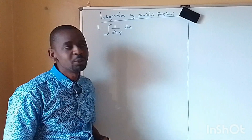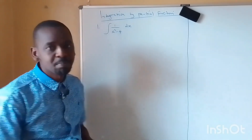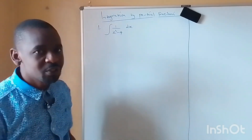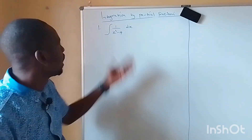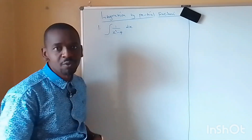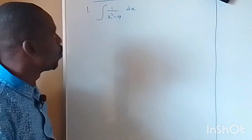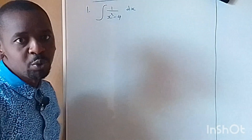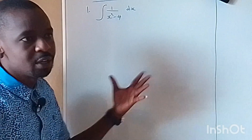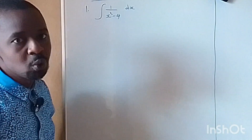Hello everyone and welcome to another video. We want to look at integration by partial fraction, and we have a very simple example: the integral of 1 over x squared minus 4, dx. This is just an example so that when you're given such an equation, you make sure that you follow the procedure we want to look at.